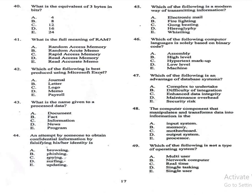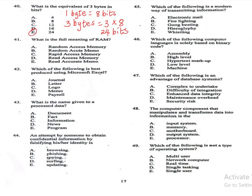Question 40: What is the equivalent of three bytes in bits? One byte is equal to eight bits, so three bytes will be equal to three times eight, which is 24 bits. The answer is 24 bits.